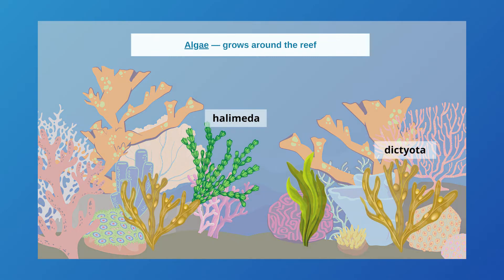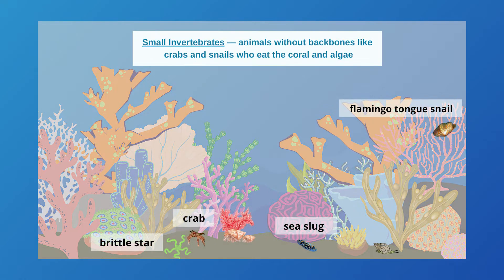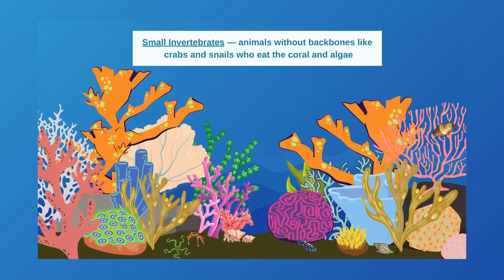Like the soft coral, different types of algae depend on a hard bottom to land on and provide protection from the waves. They grow here and provide an important food source for animals that live on the reef. Small invertebrates — animals without backbones — are another important group on the reef. They will eat the algae, soft corals, and sponges, and will also use the coral reef structure as shelter to hide from predators.